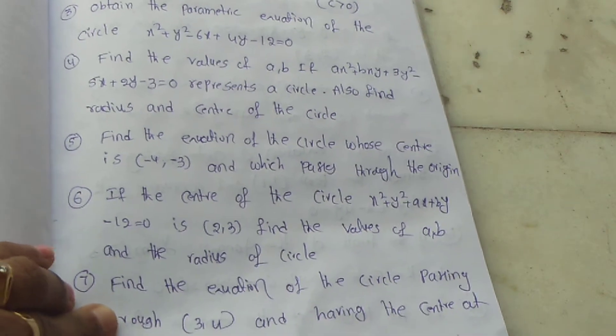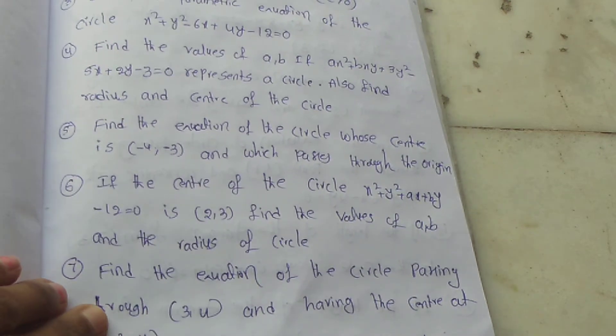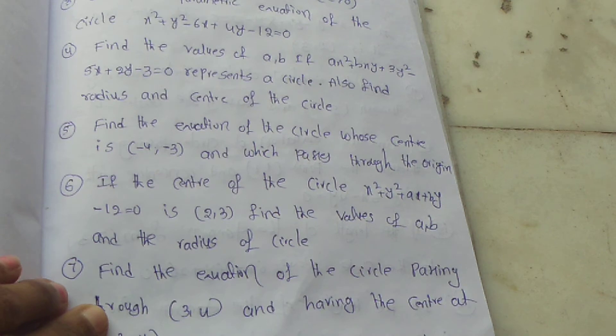Fifth question: Find the equation of the circle whose center is (minus 4, minus 3) and which passes through the origin.